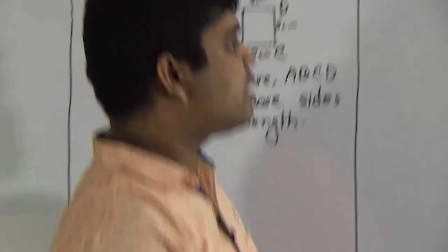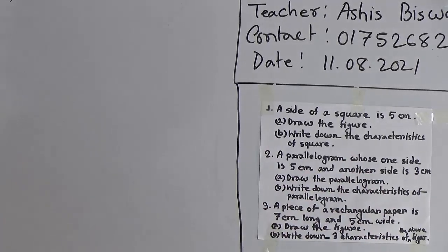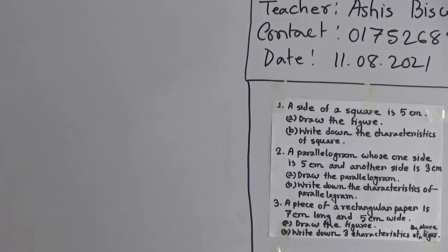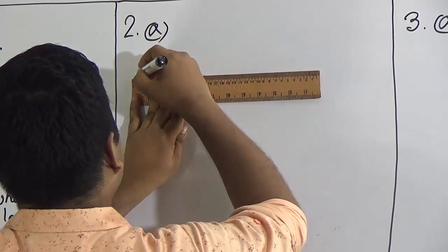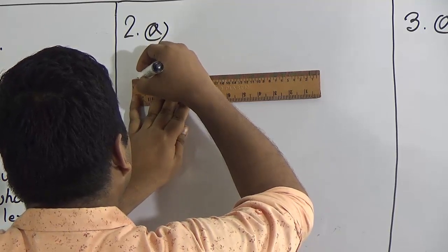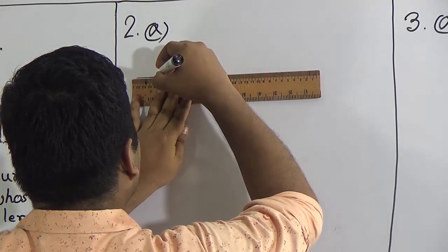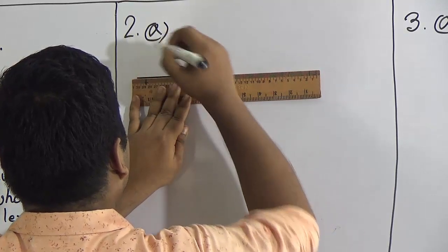Next, question number 2. The parallelogram has one side of 5 centimeter and another side of 3 centimeter. Part A: draw the parallelogram. Part B: write down the characteristics of the parallelogram. First, we take a side whose length is 5 centimeter as the base.